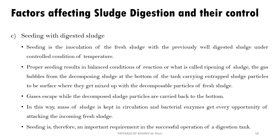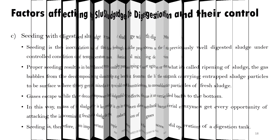The next factor is seeding with digested sludge. When you have digested sludge, you can mix fresh sludge in a process under controlled temperature conditions. This gives a balanced condition. When decomposed sludge is present, gas bubbles can be added to mix sludge into decomposable particles. Gases escape while decomposed sludge particles are carried back to the bottom, keeping massive sludge in circulation so that bacterial enzymes get every opportunity to attack the incoming fresh sludge. Seeding is therefore an important requirement for successful operation of a digestion tank.